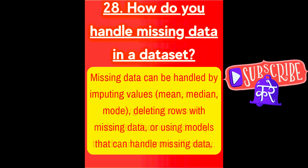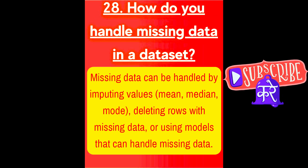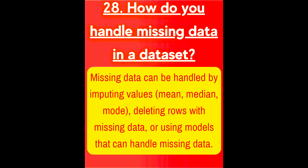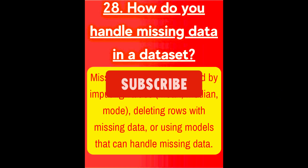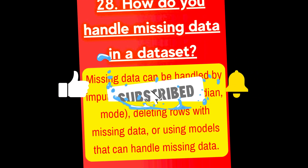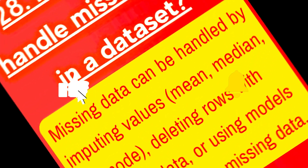Next question is, how do you handle missing data in a dataset? Missing data can be handled by imputing values — mean, median, or mode — deleting rows with missing data, or using models that can handle missing data.